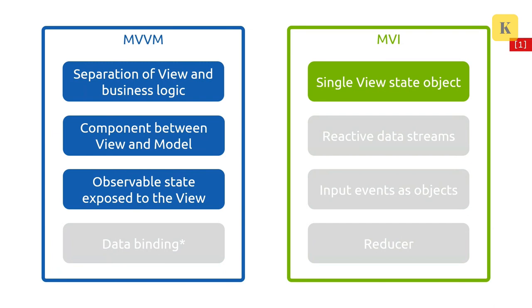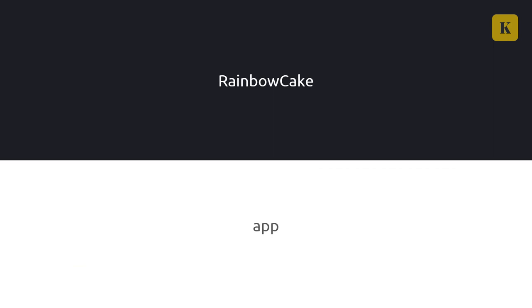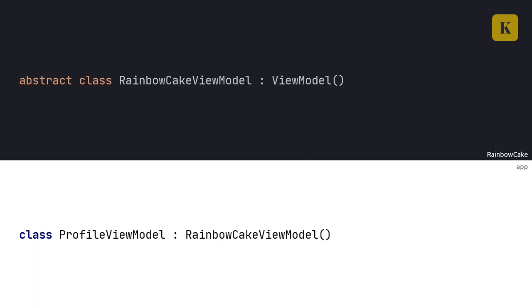I won't go into more detail about these theoretical parts in this talk — you'll find a lot of written things about this in the resources at the end. So that's the theory out of the way. Now let's get to the actual code, and we're going to start with the state handling part. I'm going to show you two things: on the top of the slide I will be implementing Rainbow Cake itself — the framework code — and on the bottom you're going to see an app being built on top of the framework. For state handling and event handling, Rainbow Cake uses base classes — for example, RainbowCakeViewModel.